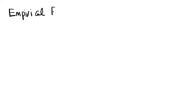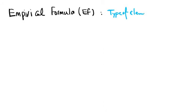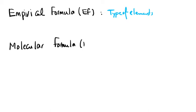First let me start with the definition we may have for each one. Empirical formula, abbreviated as EF, gives us the type of elements or atoms available in the formula. The same is true for molecular formula — molecular formula, or MF, gives us the same information: type of elements.